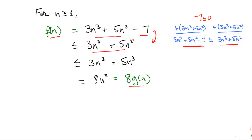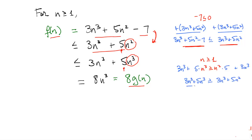In the next step, an n² term is replaced by an n³ term. We use the fact that since n is greater than or equal to 1, n³ is greater than or equal to n². Because the coefficient 5 is positive, replacing n² with n³ causes the expression to stay the same or get larger. More concretely, we start with n³ ≥ n², multiply by 5, then add 3n³ to both sides. The result is that 3n³ + 5n³ ≥ 3n³ + 5n², which is exactly the second inequality in the proof.